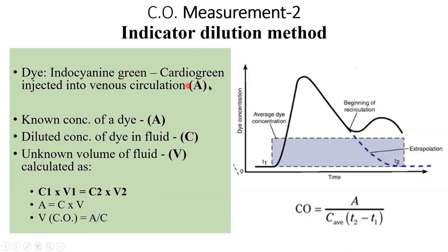Also nicknamed cardiogreen, the concentration of the dye that we will inject will be known and depicted by the letter A. When we inject this amount, say around 5 ml, the diluted concentration of the dye in the fluid will be depicted as C.